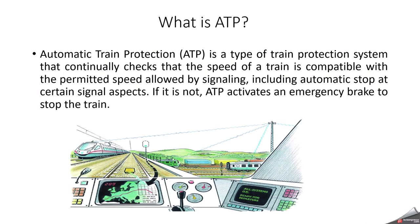Just as you can easily find out from your mobile phone where your train is traveling and when it will reach the next station, the Automatic Train Protection system continuously checks the speed of a train within the permissible speed limits. If the train is not within permitted speed, ATP activates an emergency brake to stop the train. This is generally called Automatic Train Protection.